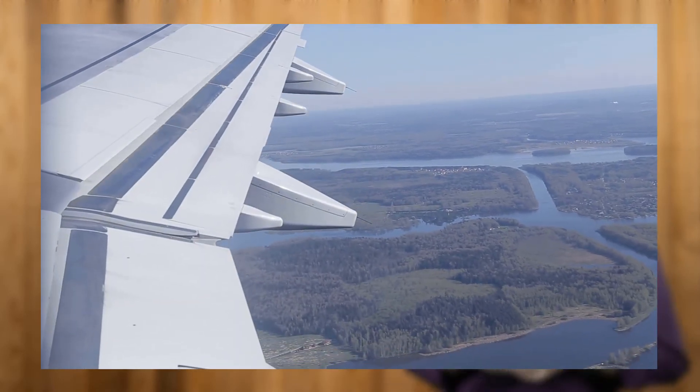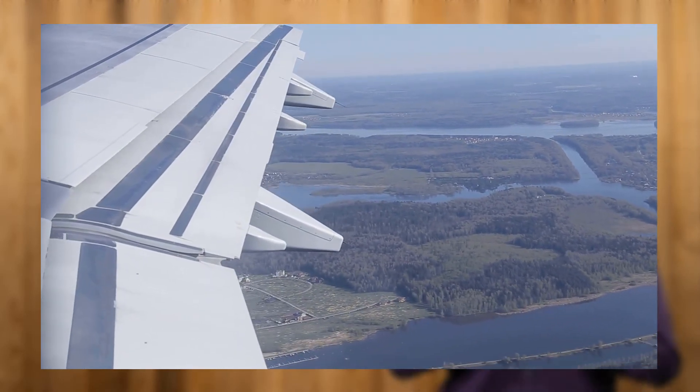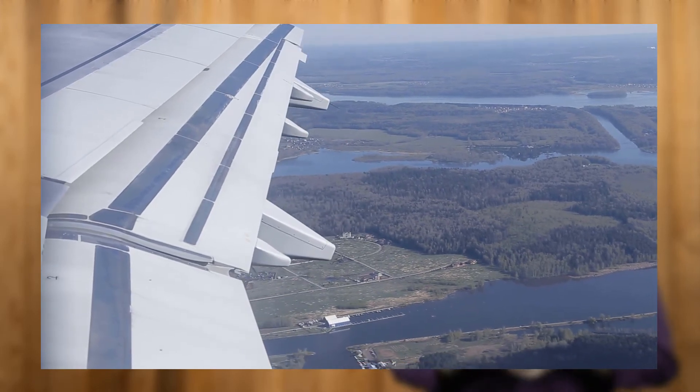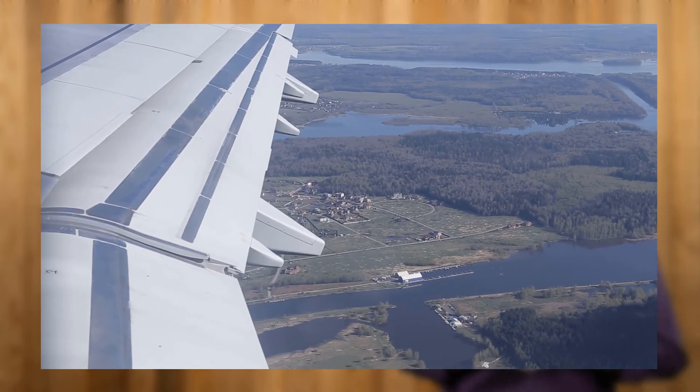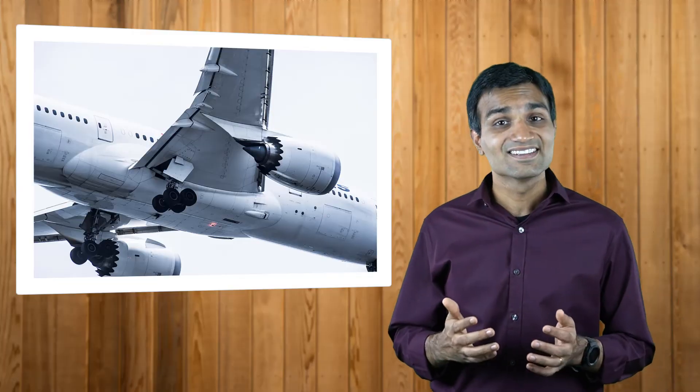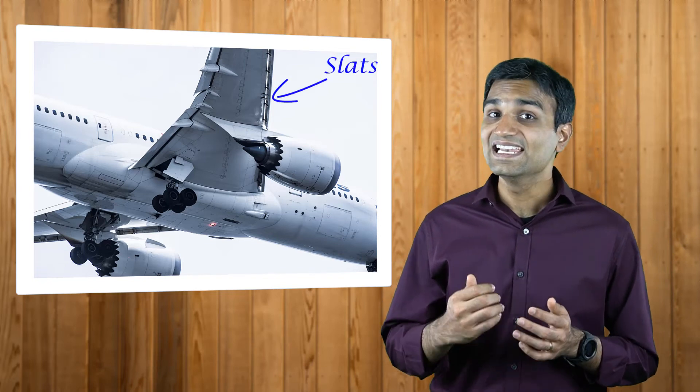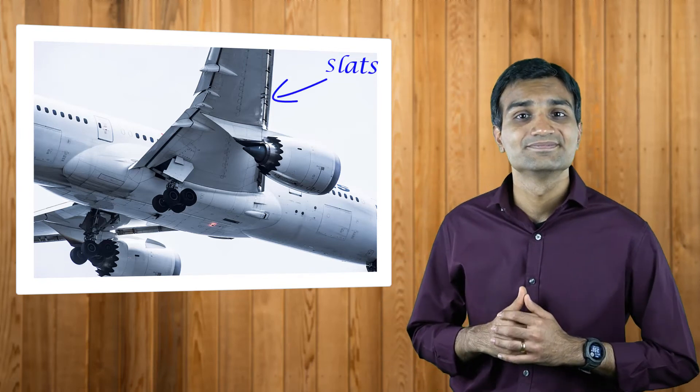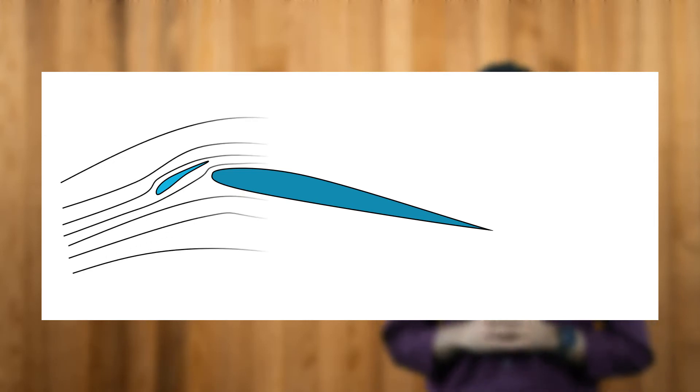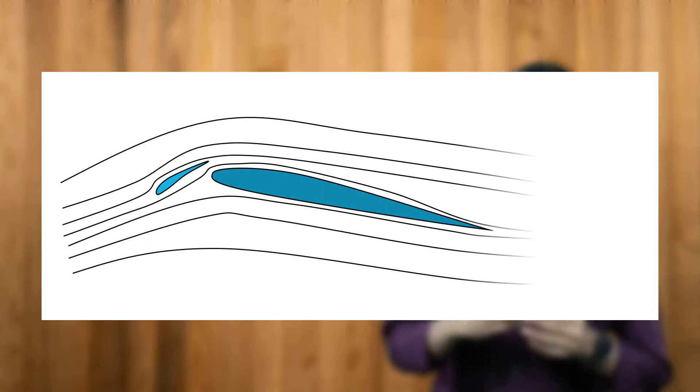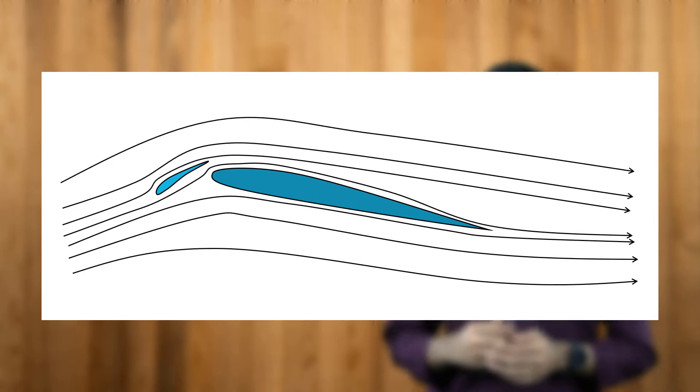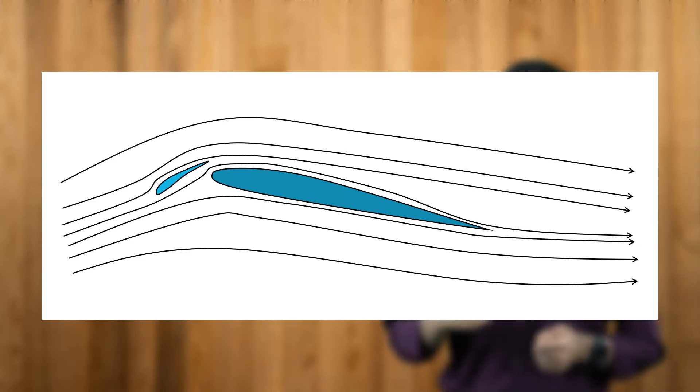This is accomplished by employing high-lift devices such as slats and flaps in large commercial aircrafts. Slats are aerodynamic structures fitted on the leading edge of an aircraft. The secondary flow between a slat and the airfoil reduces the adverse pressure gradient experienced on the top surface, thereby delaying the flow separation. This allows aircrafts to operate at a larger angle of attack.